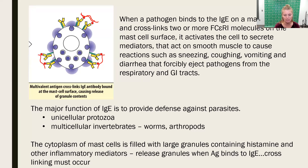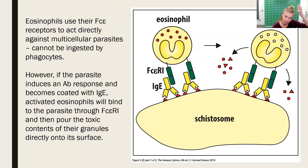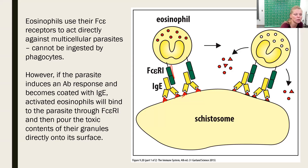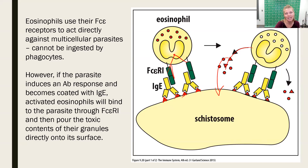The cytoplasm of mast cells has granules containing histamine and inflammatory mediators. When cross-linking occurs, degranulation occurs. The IgE bound to the FC-epsilon receptor recognizes multiple epitopes on the surface of a multicellular worm, cross-linking occurs, and that tells the eosinophil to degranulate — spilling its toxic chemicals right on the surface of the worm to hopefully destroy it. It could also lead to diarrhea to expel the worms from the gut, or sneezing to expel them from the nose.